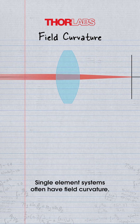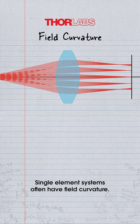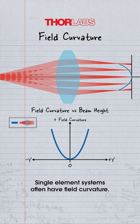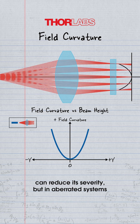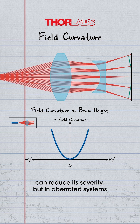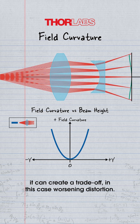Single element systems often have field curvature. A field flattening element, like a plano-concave lens, can reduce its severity. But in aberrated systems, it can create a trade-off — in this case worsening distortion.